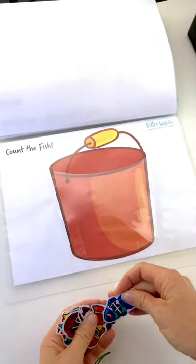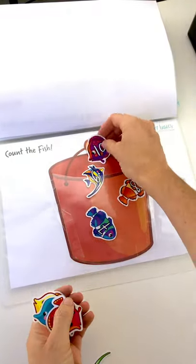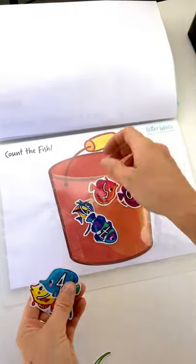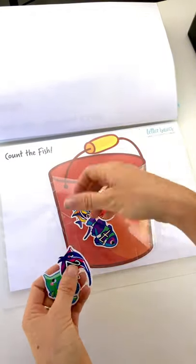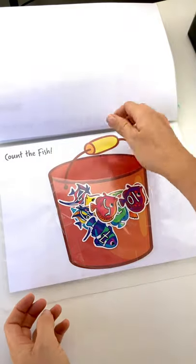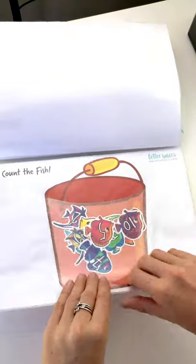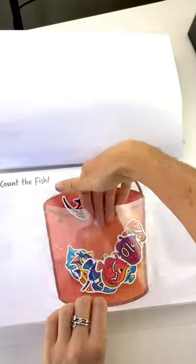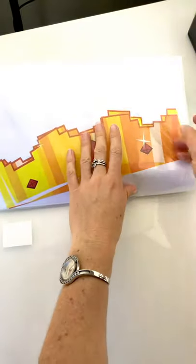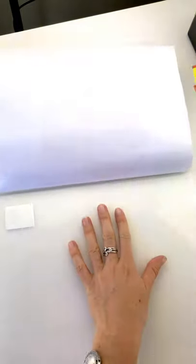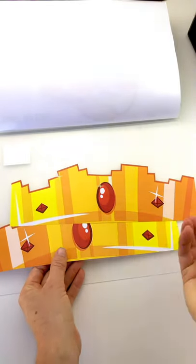So we can now count the fish as we put them in the bucket. One, two, three, four, five, six, seven, eight, nine, ten. There you go. And you just grab them out again. I love that one, that's really cute. Hopefully your kids will have fun with that. And the last one is the crown.